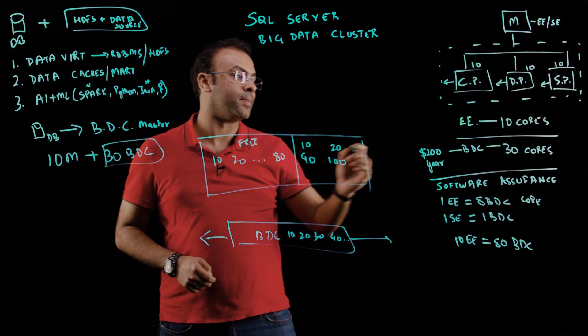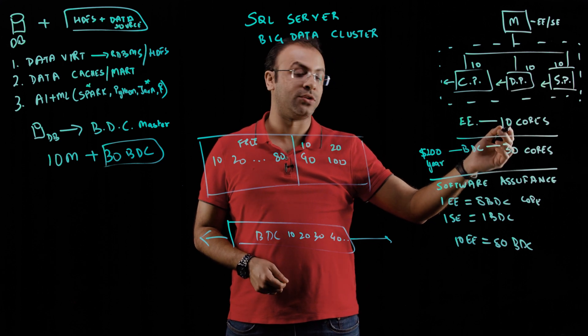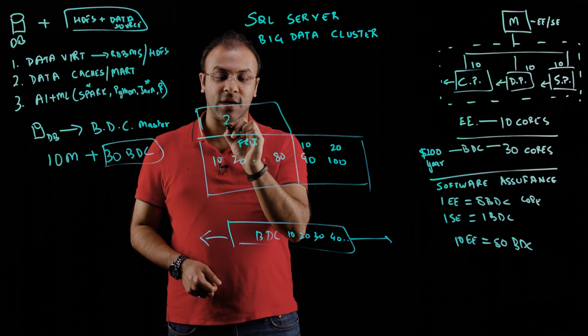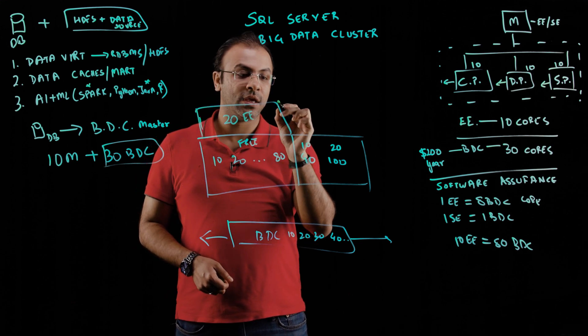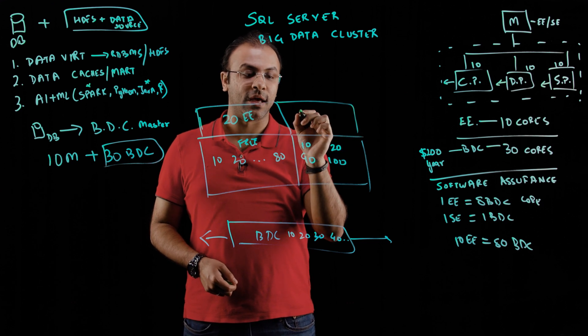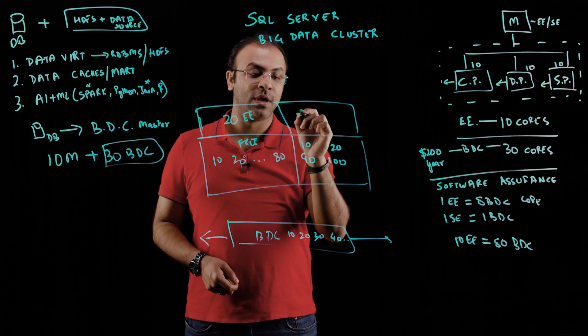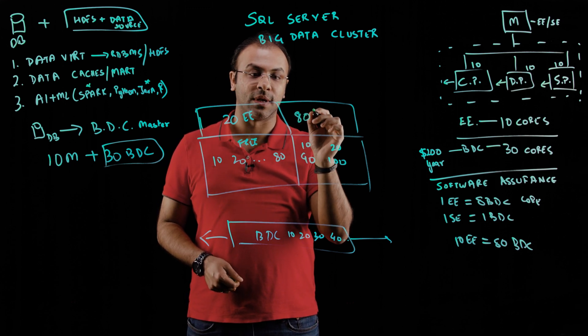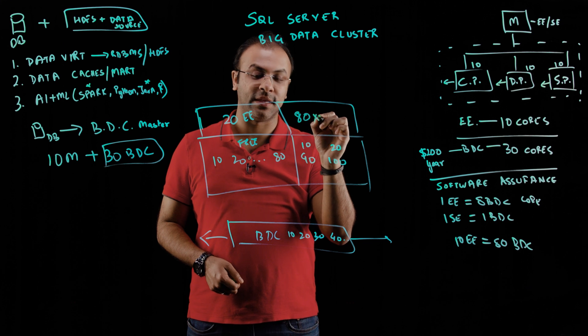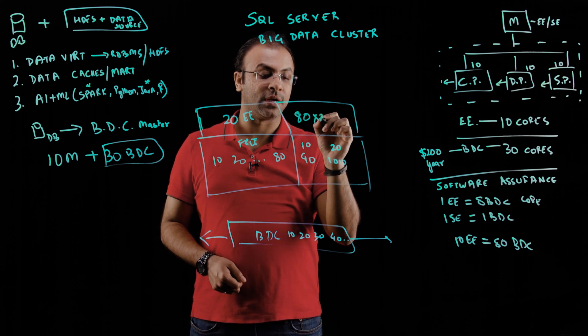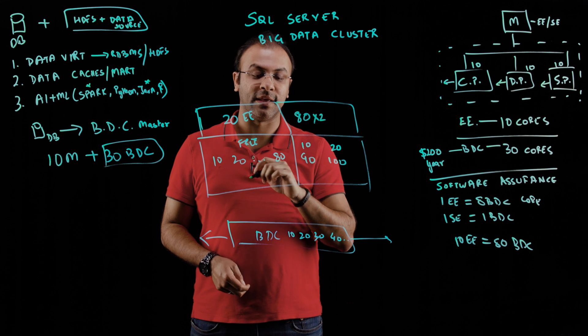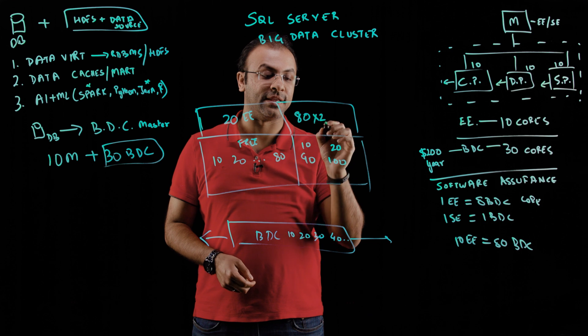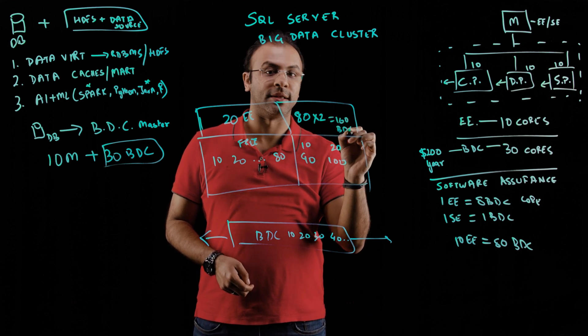For example, if your database has started getting bigger and you had to move from 10 to 20, if you had 20 EE cores, you would end up getting another 80 cores. So now you would get 80 into two. Previously, we were getting 80 cores because you had 10 in the master. Now you have another 80. So that gets you 160 big data cores.